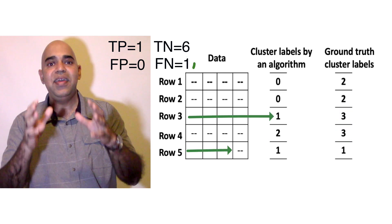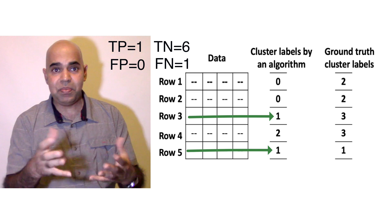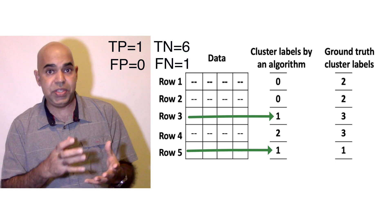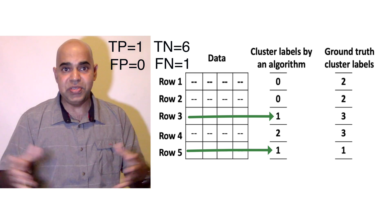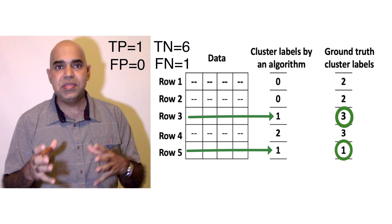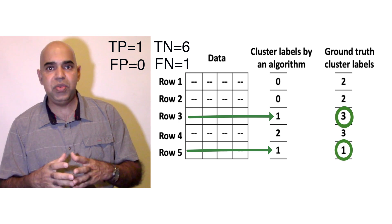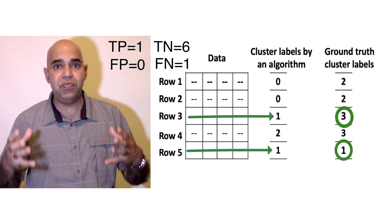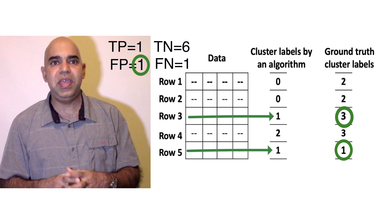The third and fifth rows are from the same algorithmic cluster, which is cluster 1. Hence, this is a positive pair. However, the ground truth says they are from two different clusters. Hence, we have a false positive. Let us update FP.